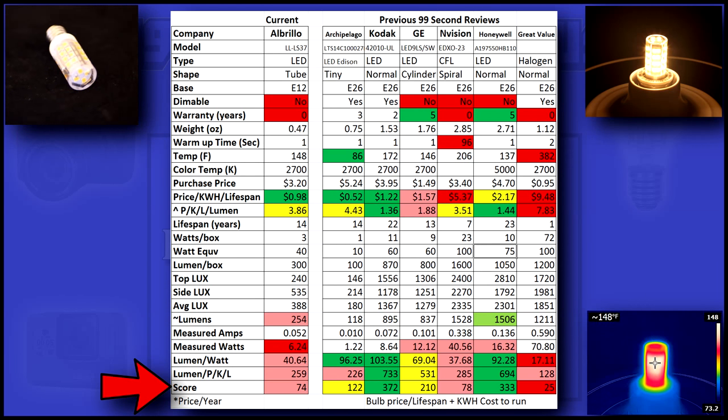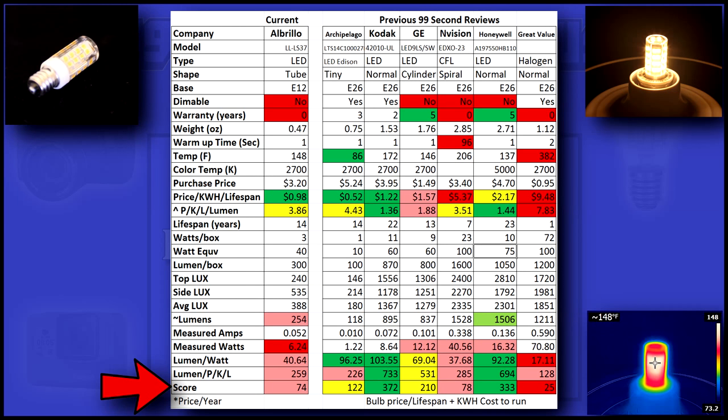I give each bulb a score. This score is calculated by using all of the variables above, including purchase price, lumen per watt, warranty, lifespan, and more.